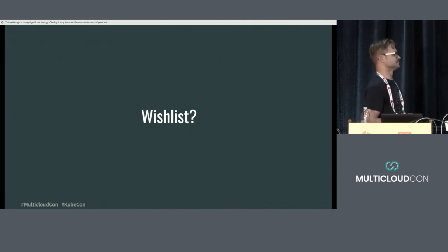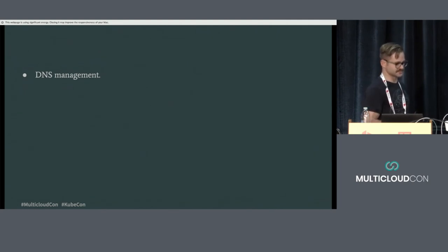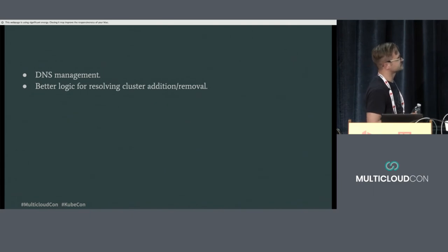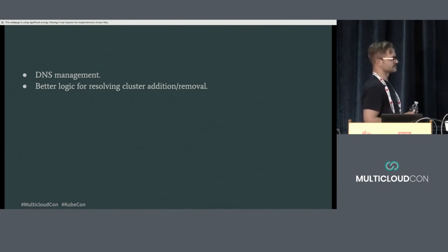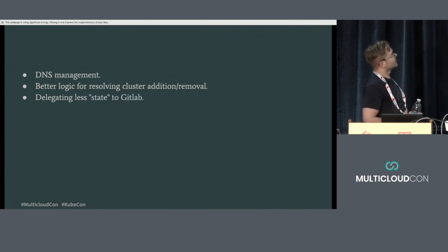On to the wishlist — what do we wish this tool could do? DNS management: we deploy to multiple clusters but don't simultaneously route traffic to deployments in multiple clusters. One of the last-mile steps of migrating from one cluster to another is updating your DNS records to point to the new cluster ingress. KubeRelease could do that but currently doesn't, so there's an out-of-band step to do that manually via GCP's Cloud DNS. We also want better logic for resolving cluster addition and removal — if you remove a cluster ID from the array, we just stop deploying to it; we don't actively reconcile and delete the service, which is a high-ceremony event. And we want to delegate less state to GitLab — merge requests are used as a locking mechanism, but that's not a proper semaphore. If we had Redis, for example, we could create a proper lock there.